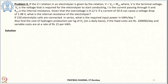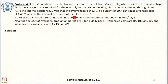The fourth problem: the voltage-current relation in an electrolyzer is V = V₀ + IR_internal. Over voltage is 0.12 volt, and a current of 50 amperes results in a voltage drop of 1.48 volt. We need to find the internal resistance of the electrolyzer, and also if 150 electrolytic cells are connected in series, find the required input power in kilowatt hour per day.